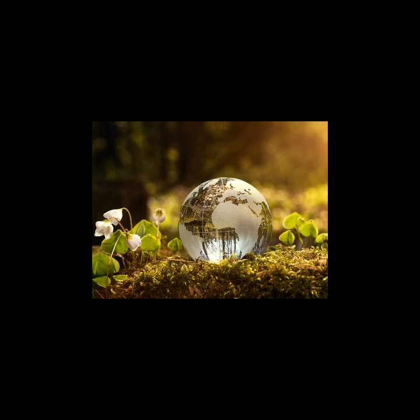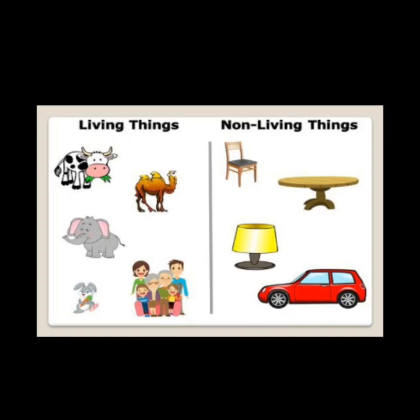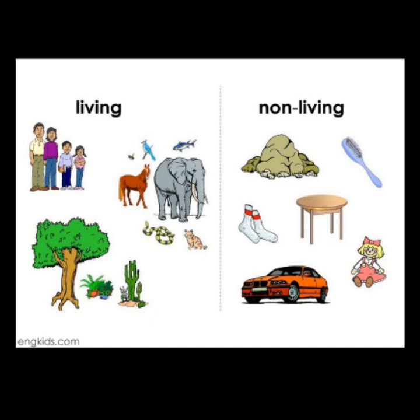Hi students, we are going to study about the NCRT class 7 geography 1st chapter, Environment. We know that whatever we can see in our surroundings is our environment. We can see table, car, tree, house, road, plants, animals, birds. That means the place, people, things and nature that surround any living organism is called environment.